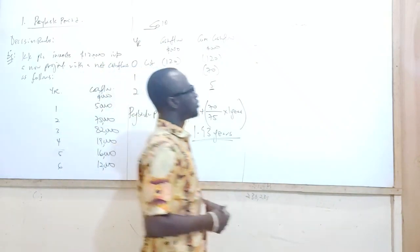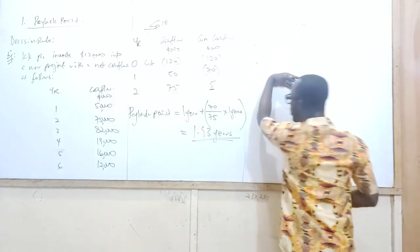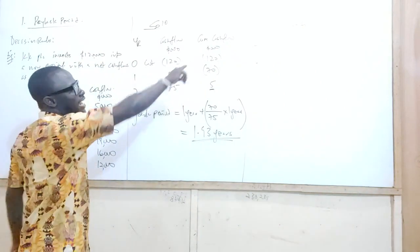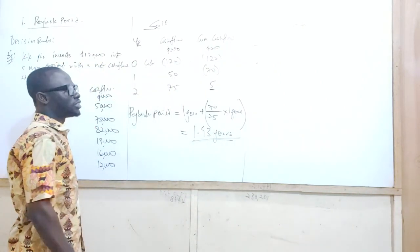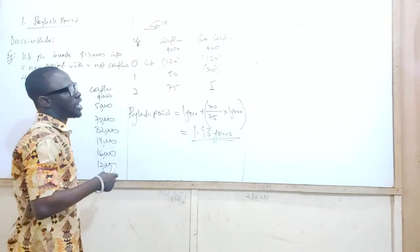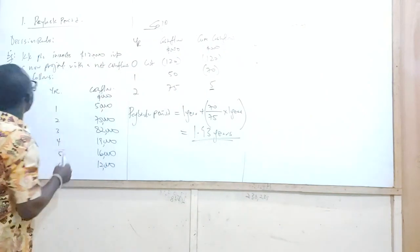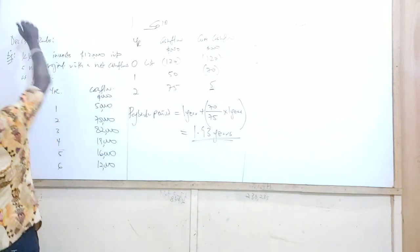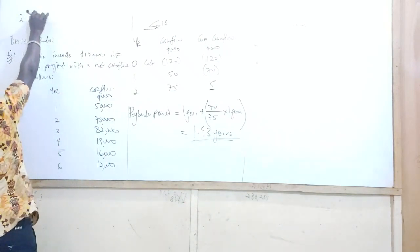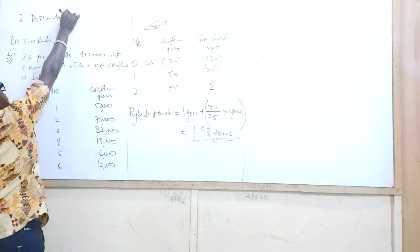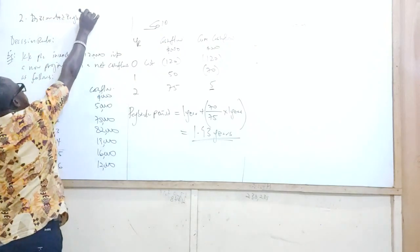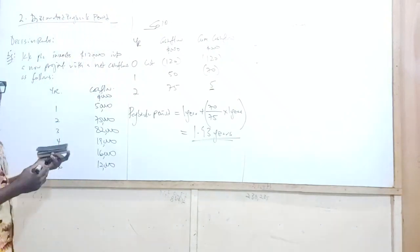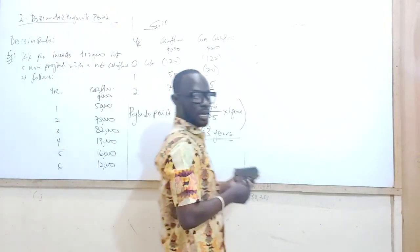So these are the limitations of the payback period. It is because of the second limitation — that it does not consider the time value of money — that the second method was developed, which is the discounted payback period.